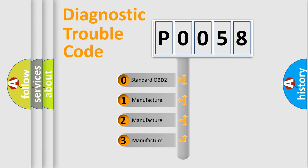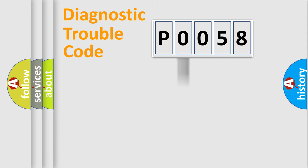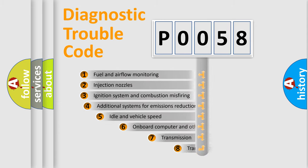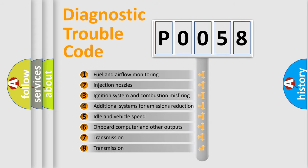If the second character is expressed as zero, it is a standardized error. In the case of numbers 1, 2, 3, it is a manufacturer-specific error expression. The third character specifies a subset of errors.